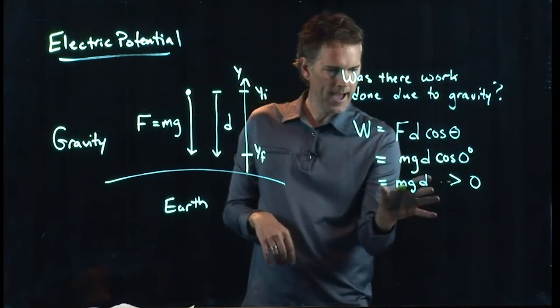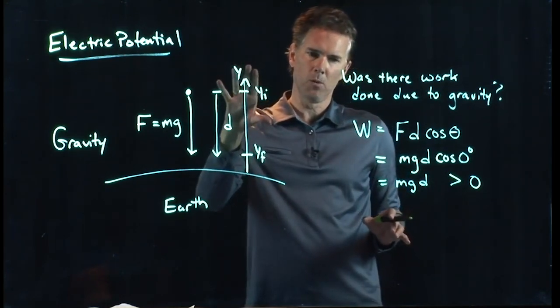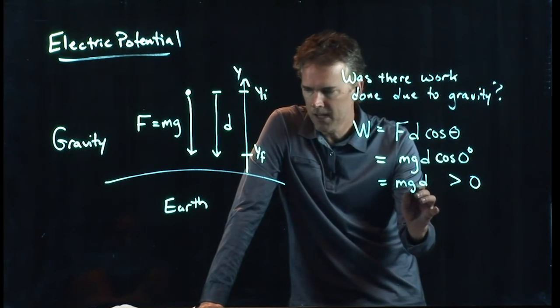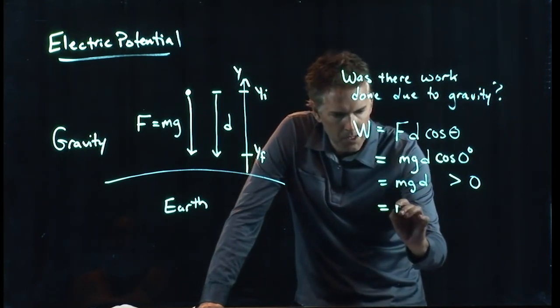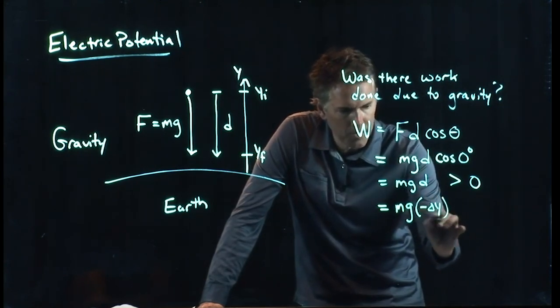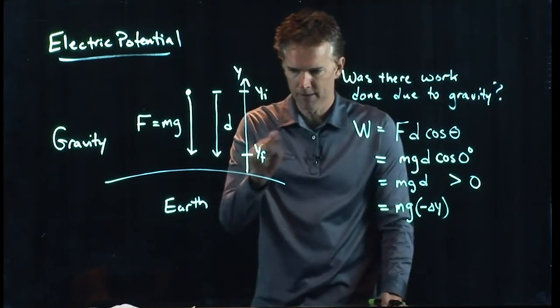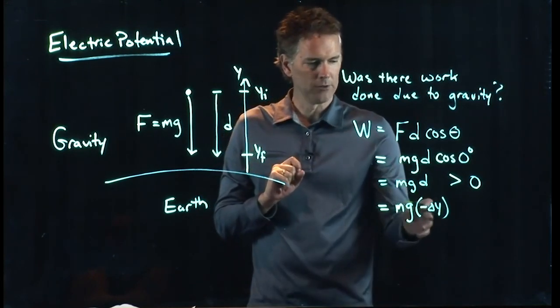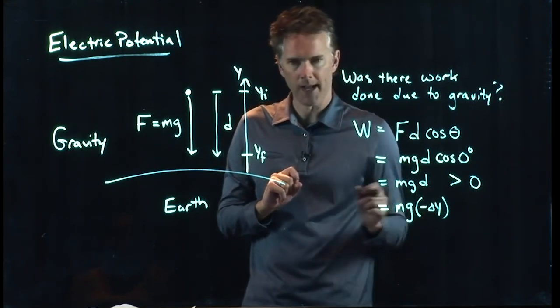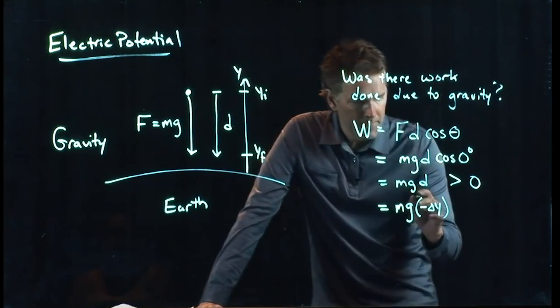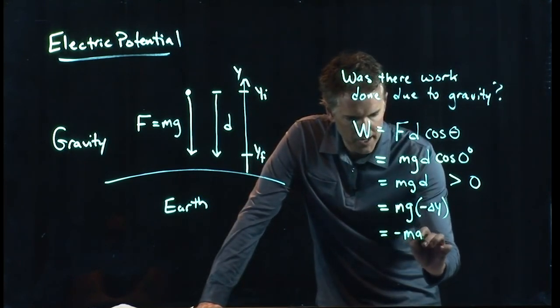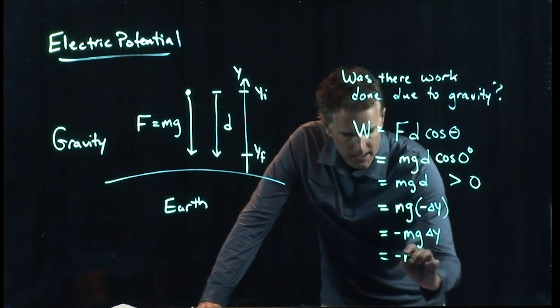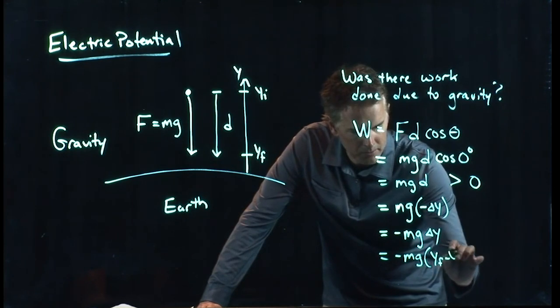But how do we put that in terms of Y, this variable Y that we said is the height above the Earth? Well, if I look at D, I can see that that is actually going to be the negative of delta Y. Y F is down here, that's going to be a small number. Y I is up there, that's going to be a big number, so that delta Y would be a negative number, and so I have to add another negative sign right there. That negative sign can come out in front, and we can write it minus M G delta Y, where that delta Y is Y final minus Y initial.